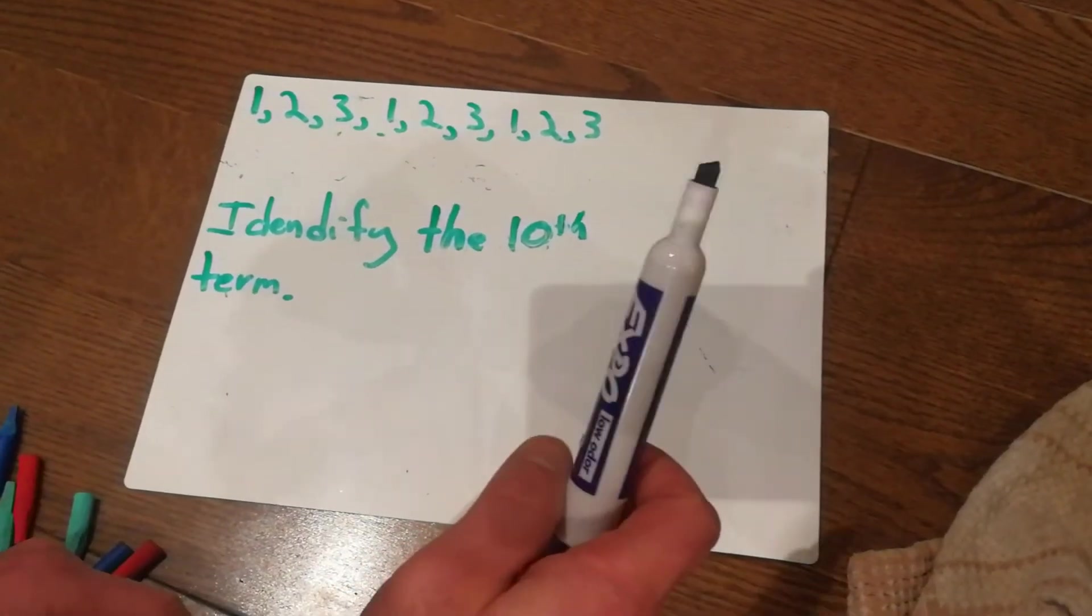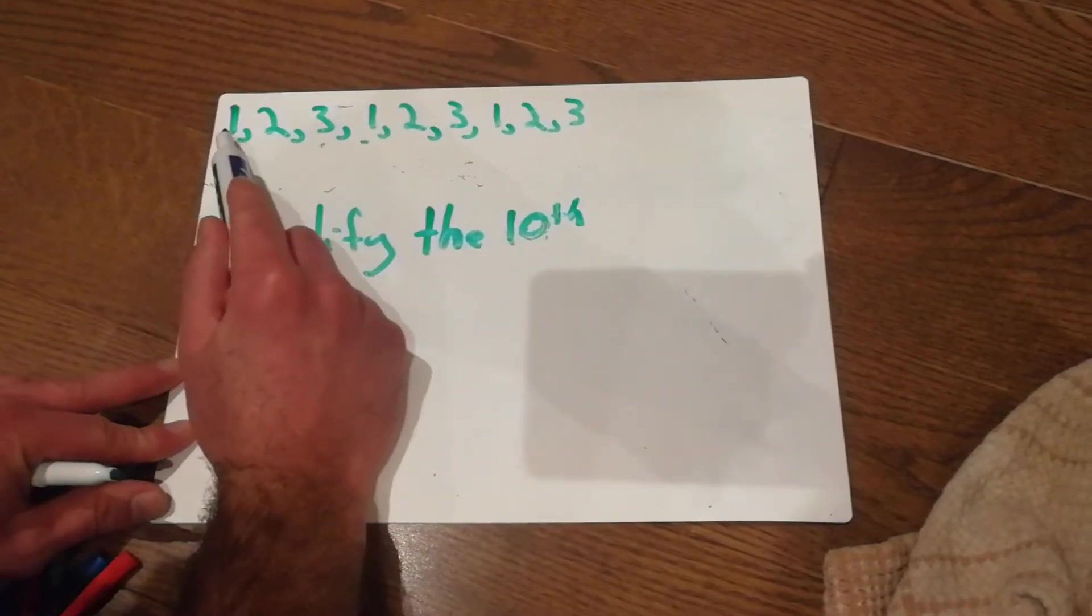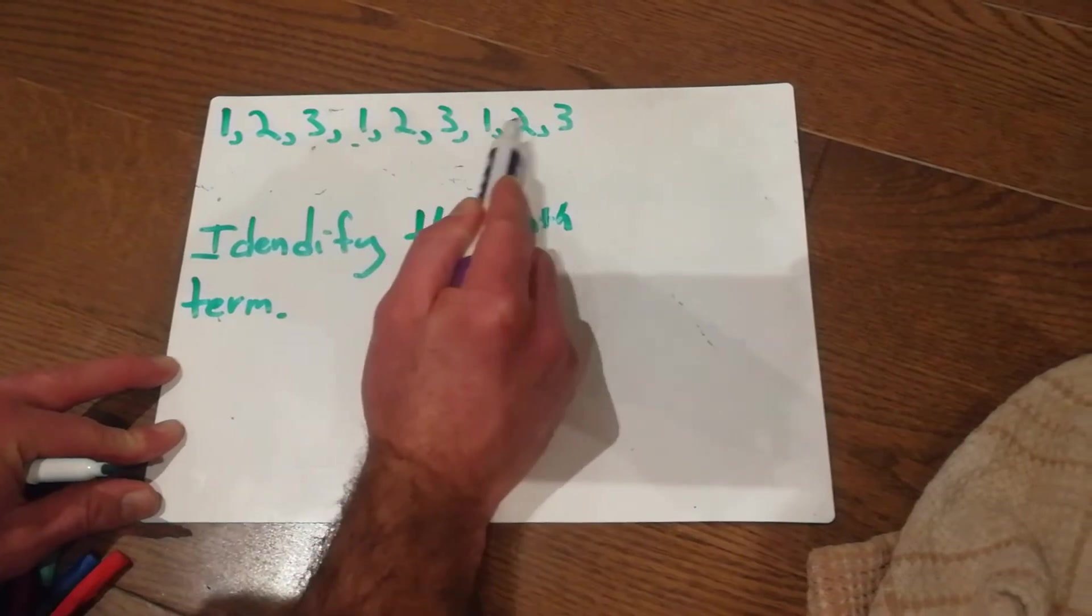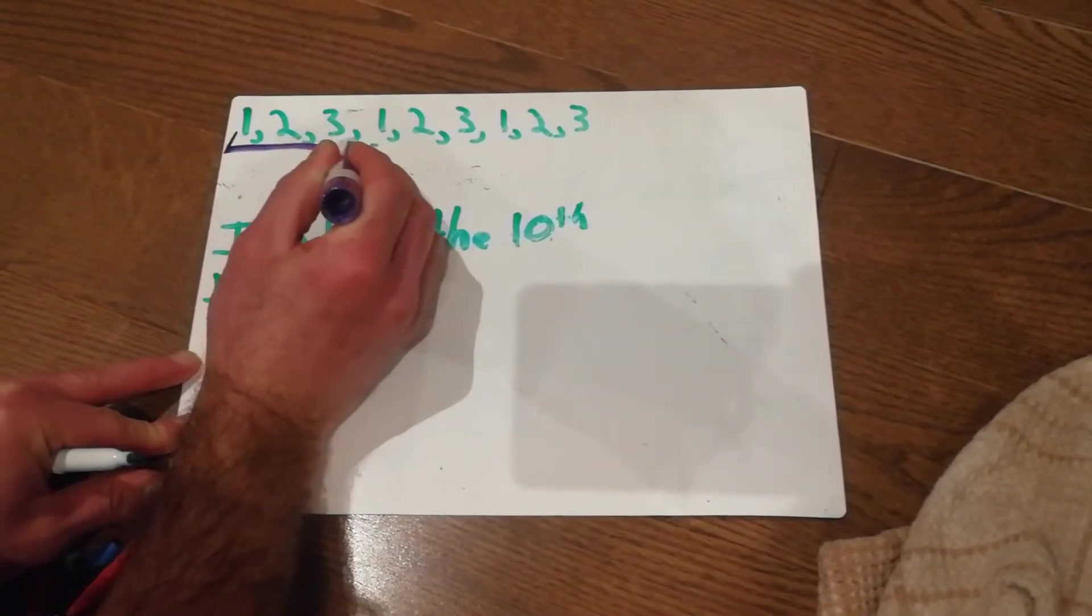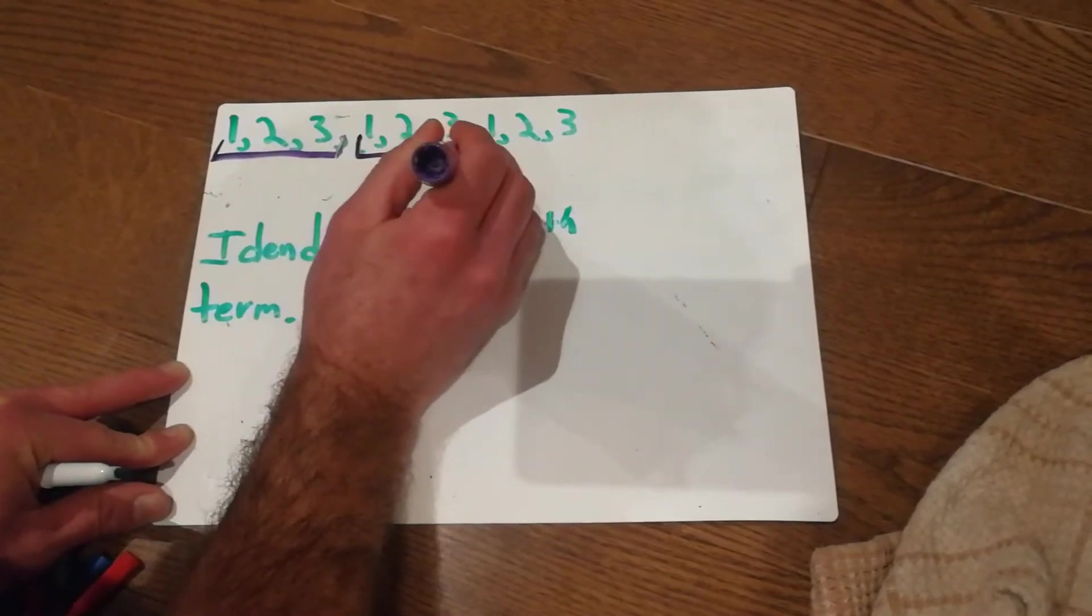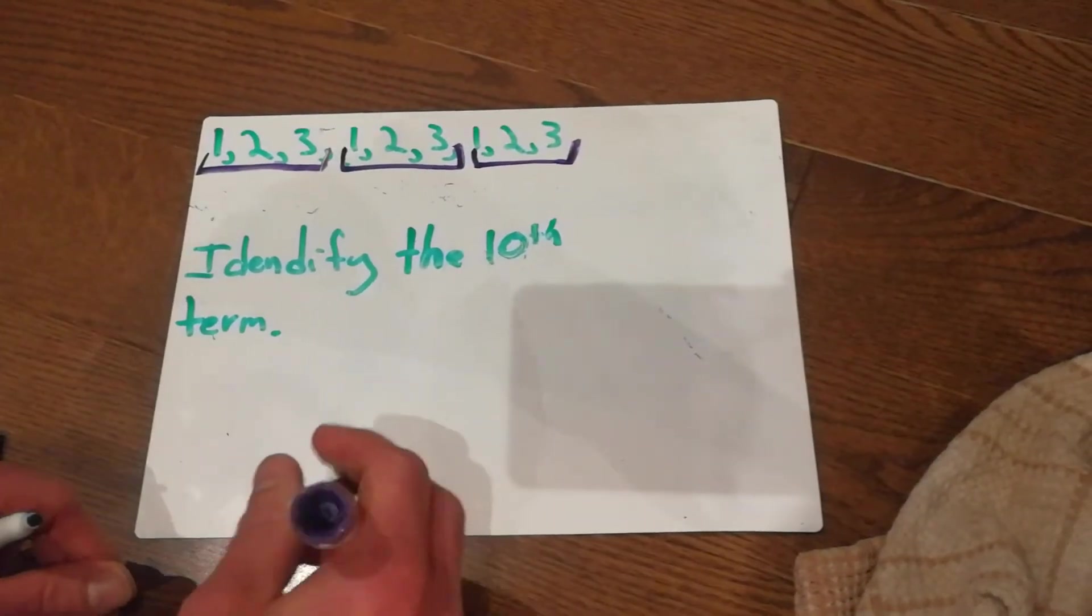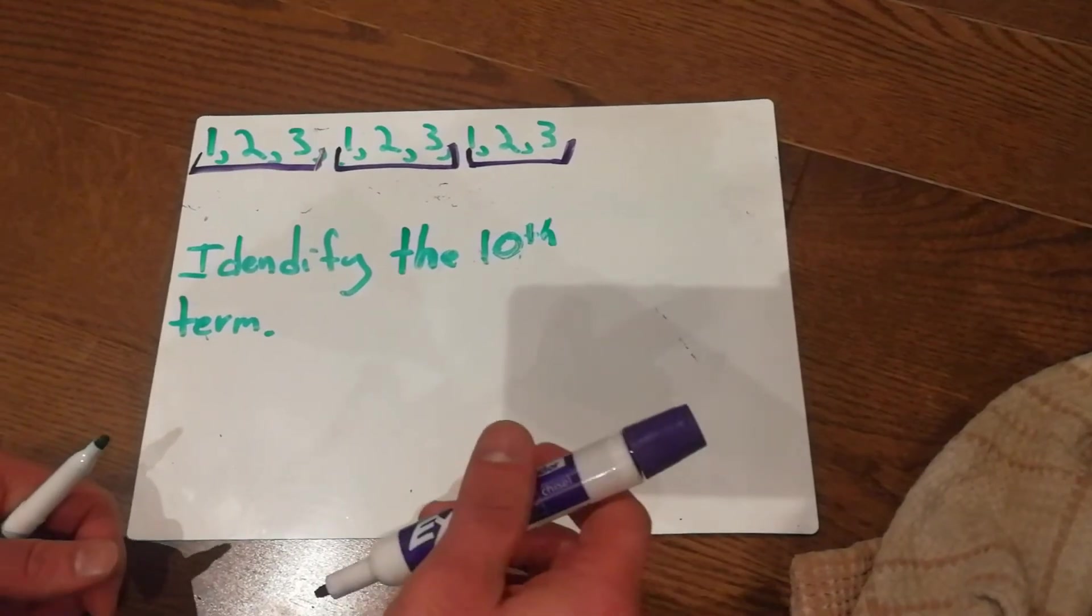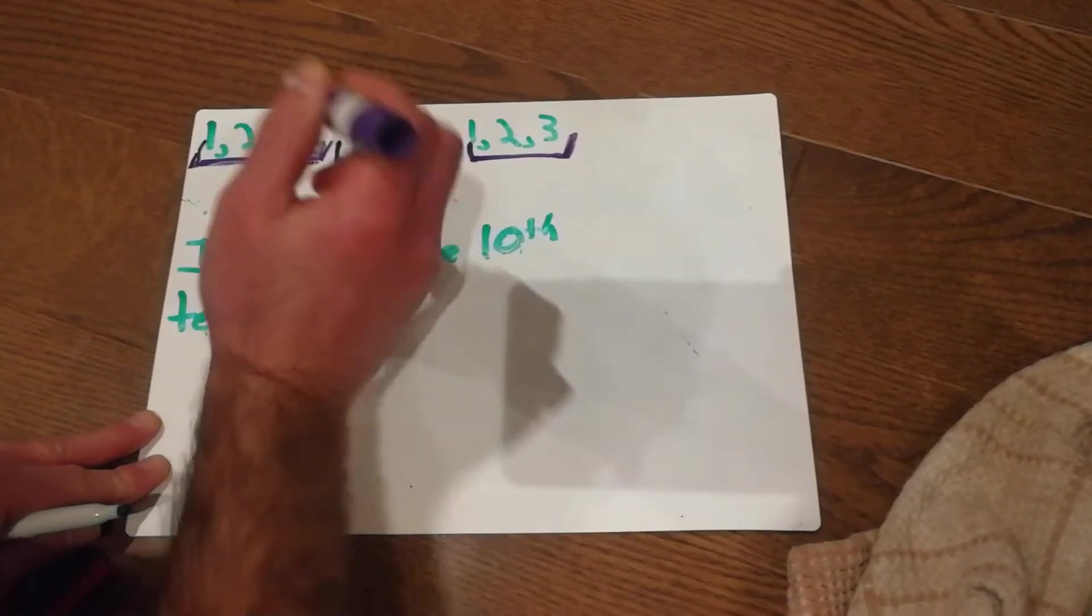The pattern core is the part of the pattern that repeats. So in my pattern here, 1, 2, 3, 1, 2, 3, and 1, 2, 3, the part that repeats is 1, 2, 3. And we can see it just keeps going. And if I were to continue my pattern, it would be 1, 2, 3 again. So again, this is the pattern core, this is the part that repeats.